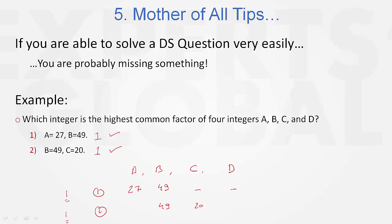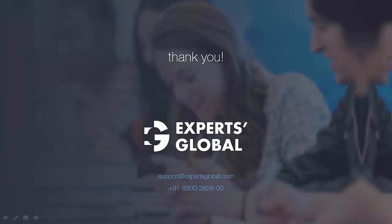Both statement 1 and statement 2 are sufficient. If you thought the answer is E, that's not correct — the answer is D. Remember the mother rule: if you're able to solve a DS question very easily, you are probably missing something. GMAT shots are deliberately kept brief. For an elaborate explanation, please refer to the stage 1 videos. Thanks for watching.